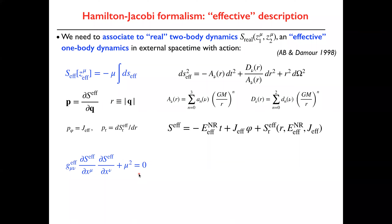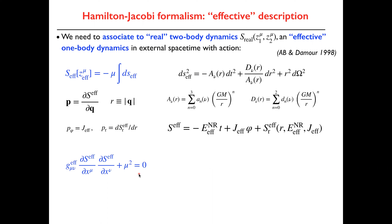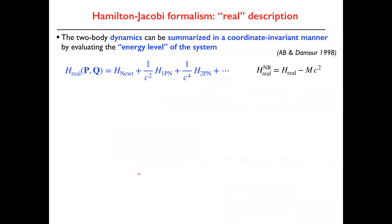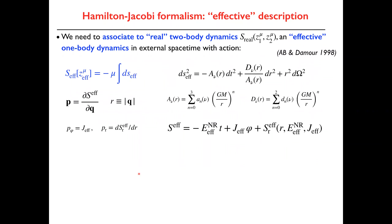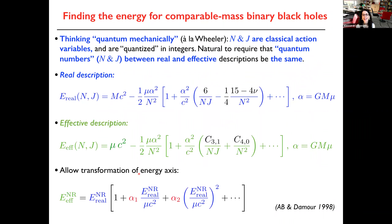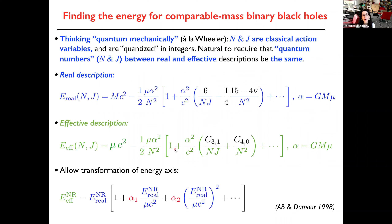Summarizing: we started from the expansion of the real Hamiltonian. We now have this effective Hamiltonian, written at 2PN — there will be a correction due to non-geodesic motion that I won't discuss here. The coefficient A is now 1 minus 2M/r with corrections in nu. The new two-body Hamiltonian in the real description is obtained by taking the square root of the effective Hamiltonian. If you post-Newtonian expand the right-hand side and do a canonical transformation, you recover the post-Newtonian Hamiltonian — but now it is resummed around the exact Schwarzschild solution.